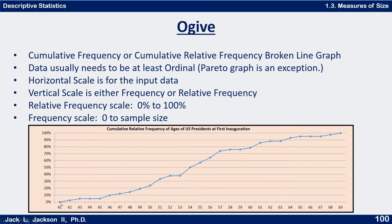It starts at 41 — there were none at 41, so that was 0%. When we went to 42, that went up a little; there was one there. Then 43, 44, and 45. At 44 there weren't any, so it stayed the same. These are cumulative frequencies.